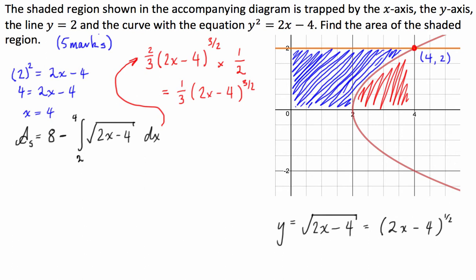Great. So, let's use that in our next bit of working out. So, we have this area is equal to 8 minus square brackets, because we're going to evaluate something, a third of 2x take 4, the power of 3 over 2, evaluated between 2 and 4.